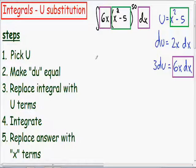So now I'm going to move on to step number 3, and I'm going to replace my integral with all my u terms. So instead of writing the integral of x squared minus 5 to the 50th power, since x squared minus 5 is equal to u, I'm just going to put u to the 50th power. And instead of writing the integral of 6x dx, since 6x dx is equal to 3du, I'm going to write 3du instead.